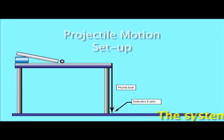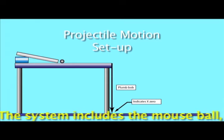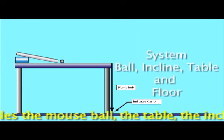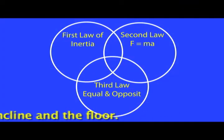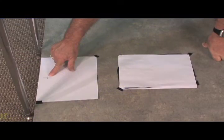Using a plumb bob, we will determine the vertical edge of the table on the floor and measure the height of the table. This data and our knowledge of physics will be used to predict where the ball will land as it hits the floor.